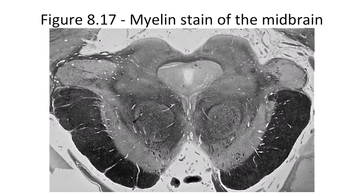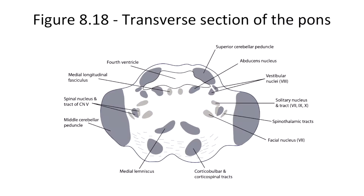Now let's look at a cross section of the pons — figure 8.18, a transverse section with anterior at the top and posterior at the bottom. The pons can be identified by the transverse pontine fibers. If you can't find them, you can deduce it's the pons by process of elimination, since the midbrain and medulla have very distinct appearances. Recall that cranial nerves 5 through 8 emanate from the pons, and most cranial nerve nuclei are adjacent to the cerebral aqueduct or fourth ventricle.